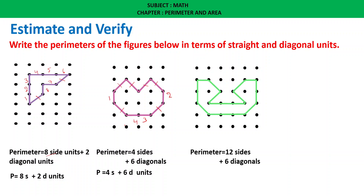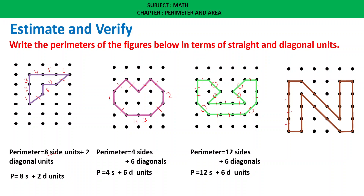For the next picture: counting straight units — 1 through 18, giving 18 side units. Then counting diagonal units: 1, 2, 3, 4, 5, 6. So the perimeter is 18 side units plus 6 diagonal units.